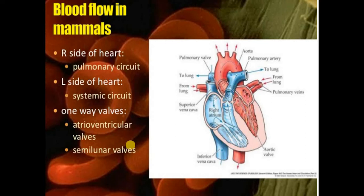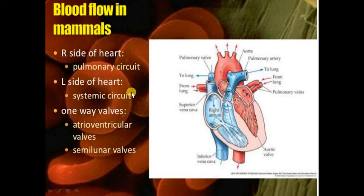The inner layer, endocardium, is made with epithelial cells. In morphology, there are three layers present in the heart. The right side of the heart acts as a pulmonary circuit, in which blood will be supplied to the lungs. And the left side acts as a systemic circuit, meaning blood supplies the whole body and different organs.